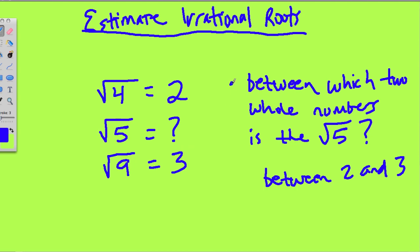They might go a little bit further and ask you, well, is it closer to 2, or closer to 3? Because 5 is so close to 4, it's reasonable to assume that it's closer to 2. So we can look at square roots in this way.